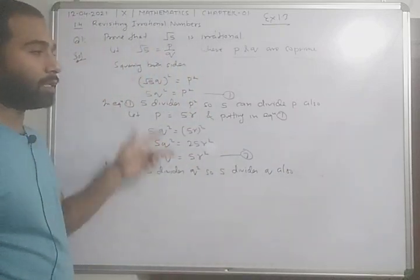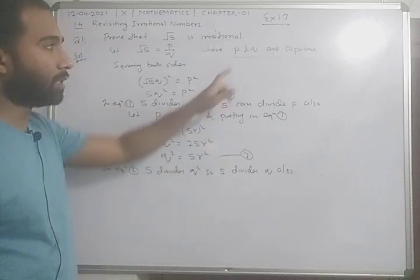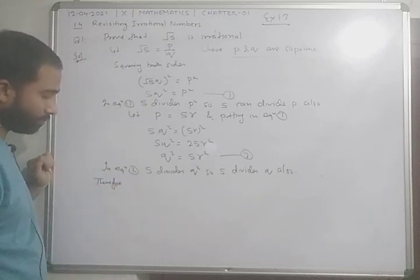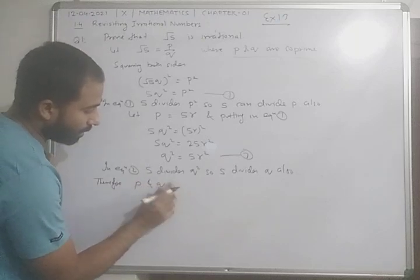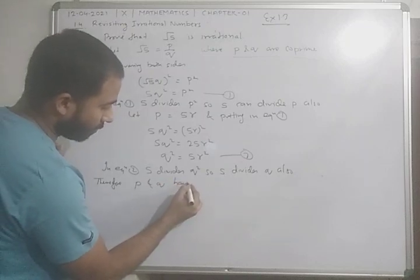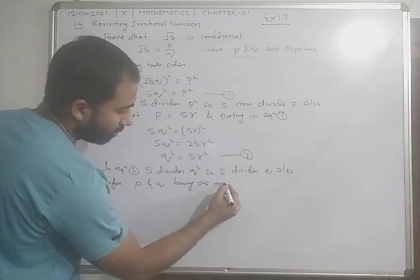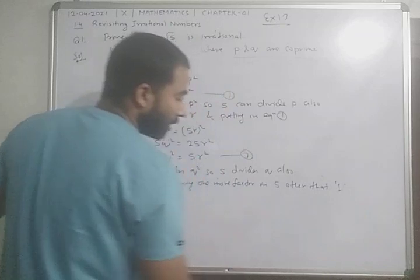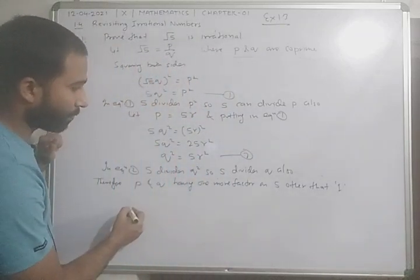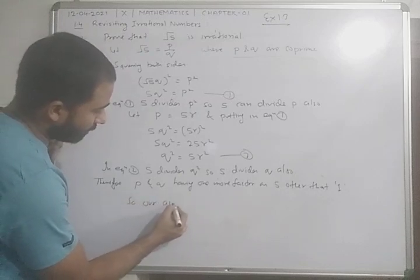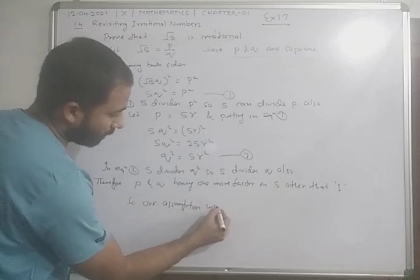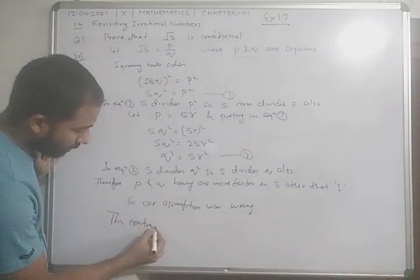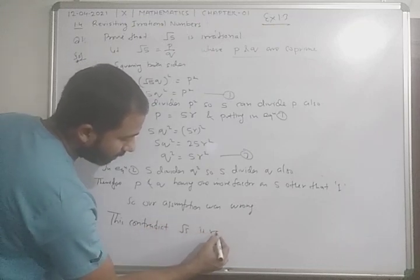Both statements are very important. Through these two statements, our assumption becomes wrong. Therefore, P and Q have one more factor — that is, 5 — other than 1. So our assumption was wrong. This contradicts our assumption, and hence under root 5 is an irrational number.